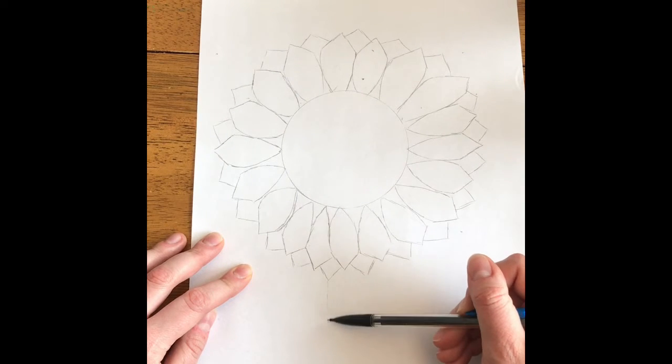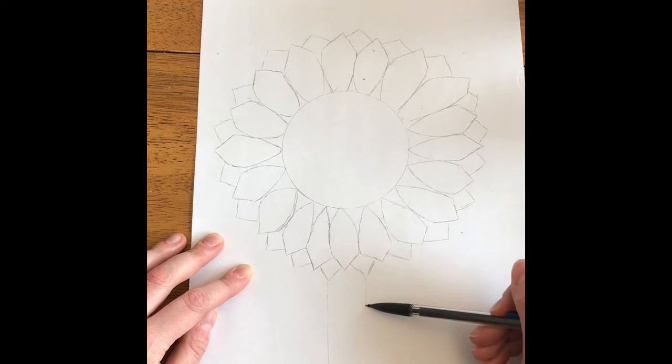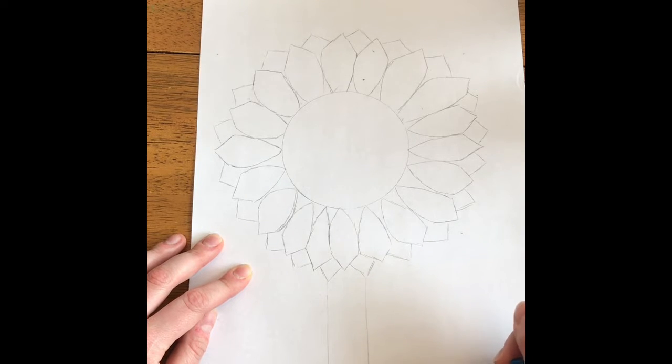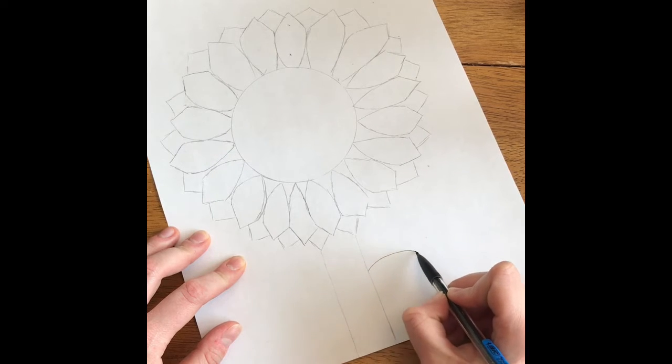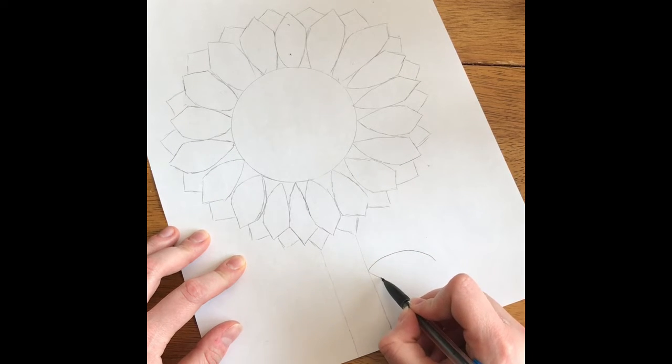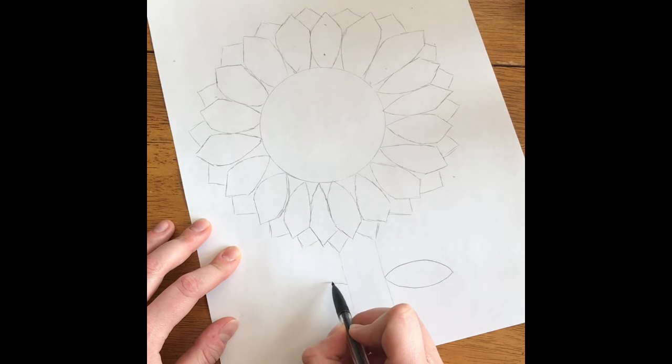And then we're going to draw the stem of our flower, drawing two vertical lines going all the way to the edge of the paper. And then we're going to draw two more, or you could just do one, little leaf or petal on the stem of our flower.